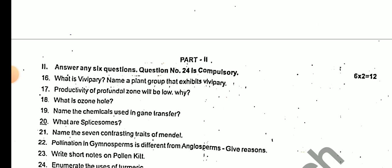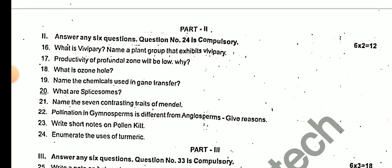For the 2-mark questions: What is Vivipary? Name the plant groups that exhibit Vivipary. Why will the productivity of the pro-bundle zone be low? What is the ozone hole? Name the chemical used in gene transfer. What are spliceosomes? Name the 7 contrasting traits of Mendel.